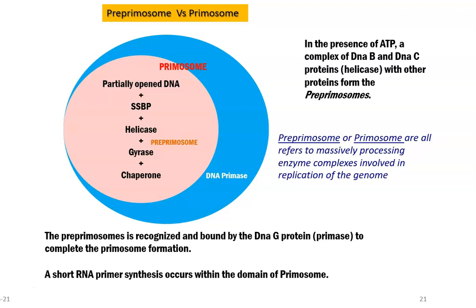Gyrase is the one which separates the supercoils present near the DNA replication process, and chaperons — referring to certain heat shock proteins — are also associated with this process. All these components form together into the pre-primosome complex. In the presence of ATP, a complex of DnaB and DnaC proteins, which collectively constitute the helicase enzyme, together with gyrase, chaperons, and single strand binding protein, form the pre-primosome complex. Pre-primosomes and primosomes are massively processing enzyme complexes involved in the replication process.